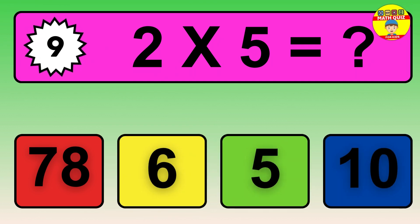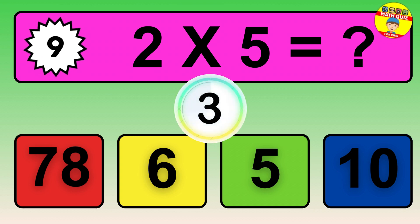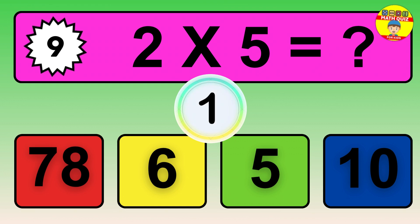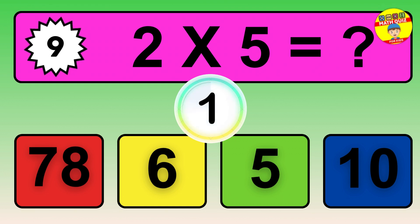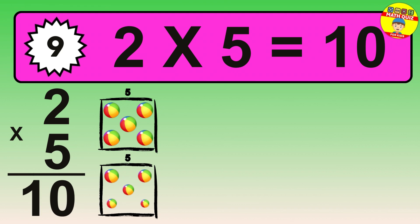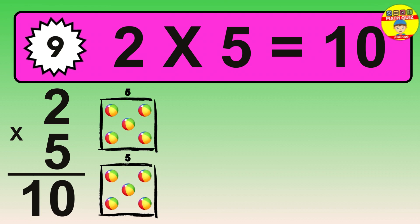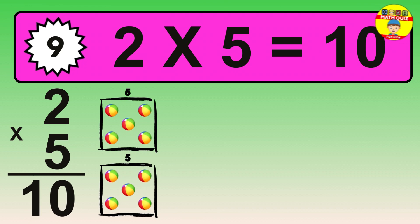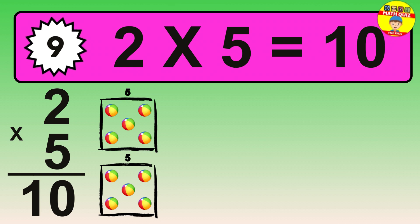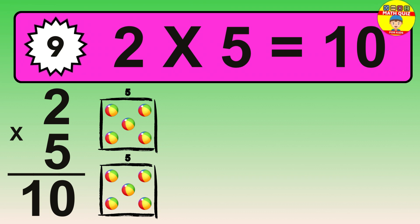Question 9. 2 times 5 equals what? The answer is 2 times 5 is 10. To calculate, we have 2 groups with 5 balls each one. So, how many balls do we have? 10 balls.